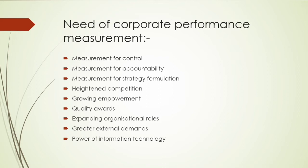Number one: Measurement for Control. Controlling mein hum ek plan set karte hain, objective set karte hain, then standards set kiye jaate hain, phir employees ko standards bataye jaate hain. Then unki performance ko measure karte hain ki woh standards ke according hai ya nahi. Agar nahi hoti to deviations find out karte hain, then corrective actions liye jaate hain. Yeh sab tab possible hoga jab hamare paas ek proper measurement system hoga.